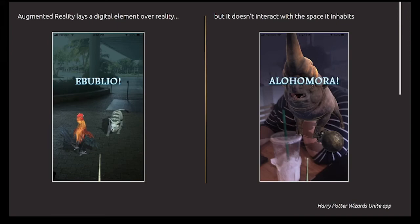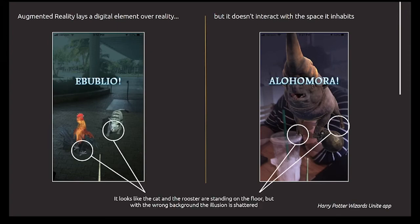Augmented reality lays a digital element over reality but doesn't interact with the space it inhabits. In the game Wizards Unite, similar to Pokemon Go, you can see a rooster appearing to stand on the floor with shadows — but compare that to another image where the beast is sitting on top of my friend, part of her arm, part of the Starbucks cup — basically floating in air, not recognizing different elevations and depth. It doesn't recognize that there is a floor there.